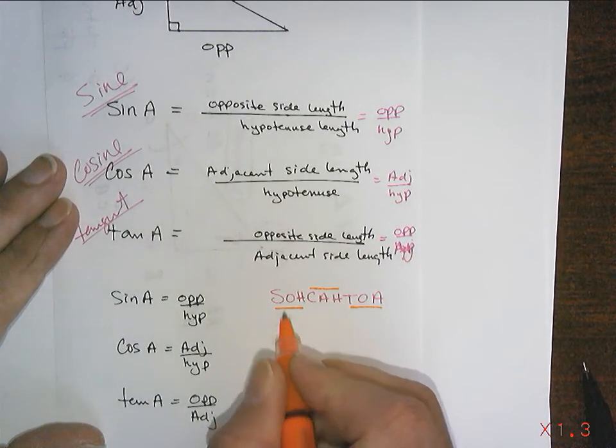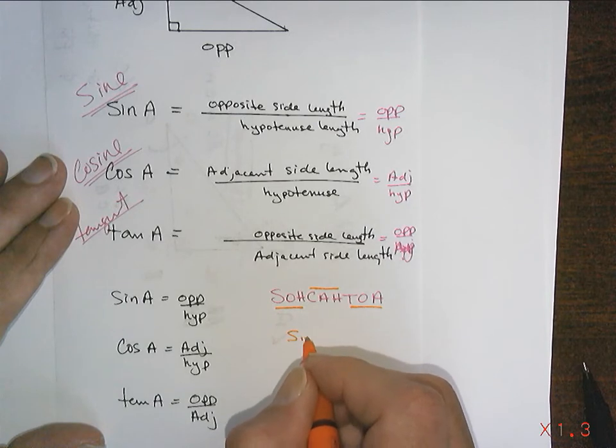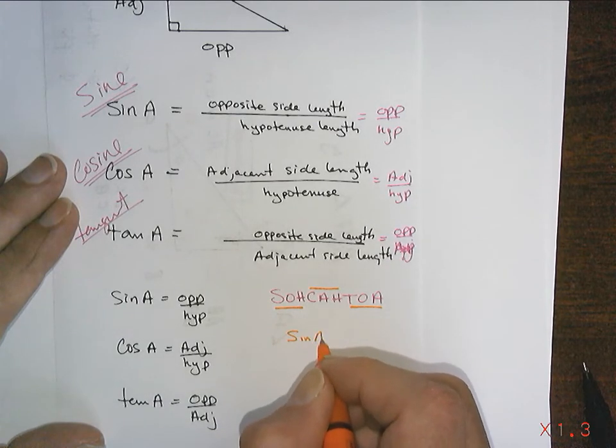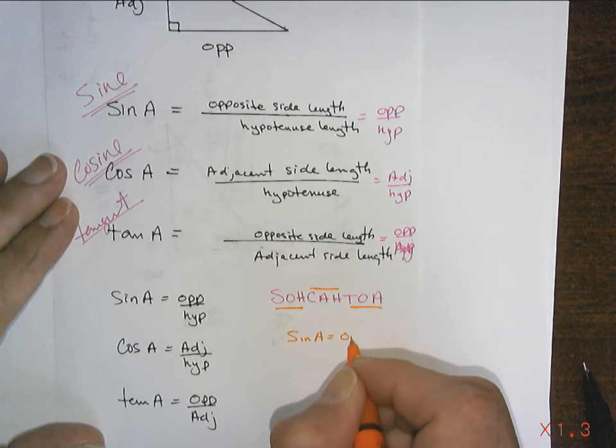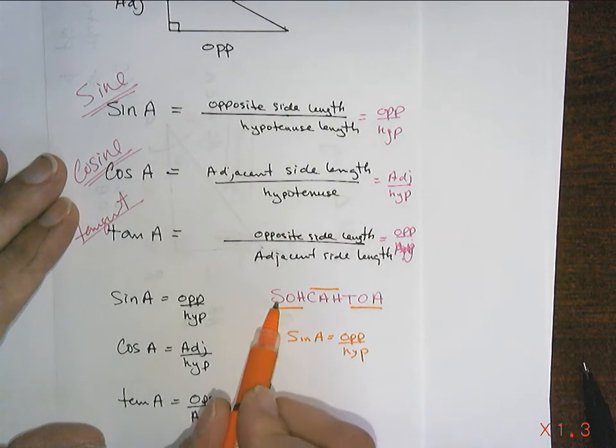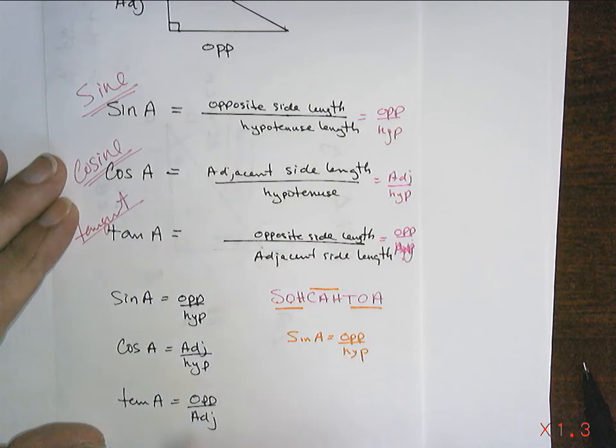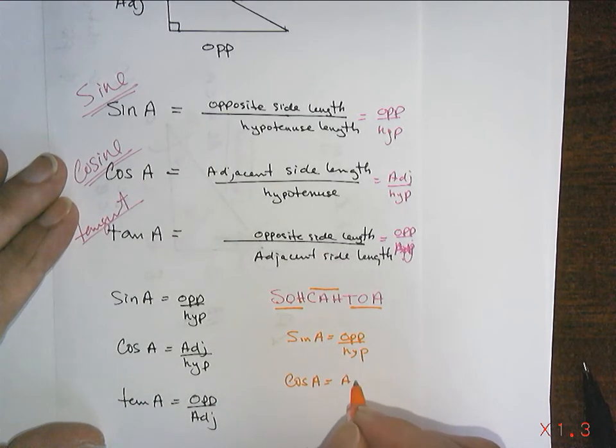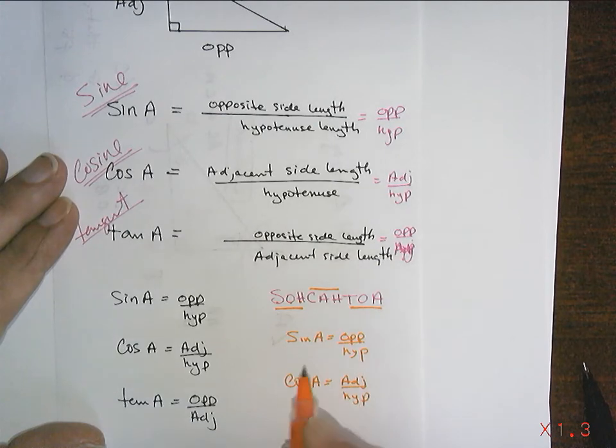There's the SOH part which stands for sine A equals opposite over hypotenuse. Do you see it? Sine, opposite, hypotenuse. Cosine A equals adjacent over hypotenuse. Do you see it? C-A-H. And tangent of A equals opposite over adjacent.